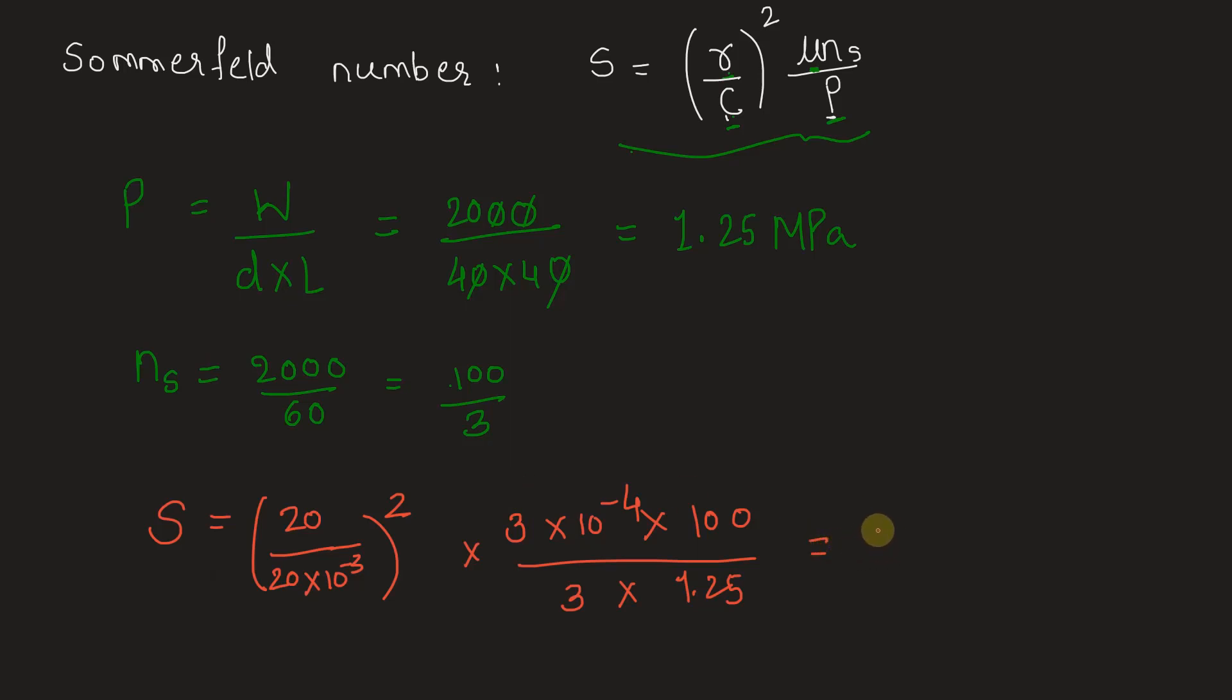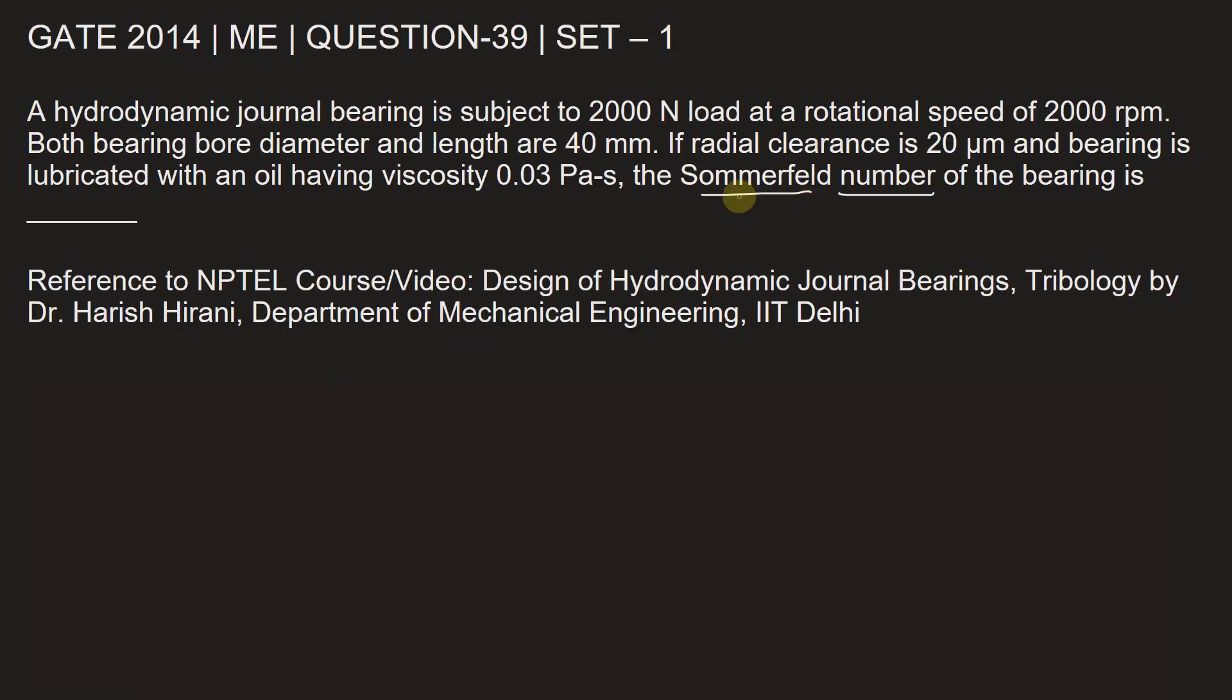The answer is 0.8. We have our answer. Let's go back and substitute. The Sommerfeld number of the bearing is 0.8.